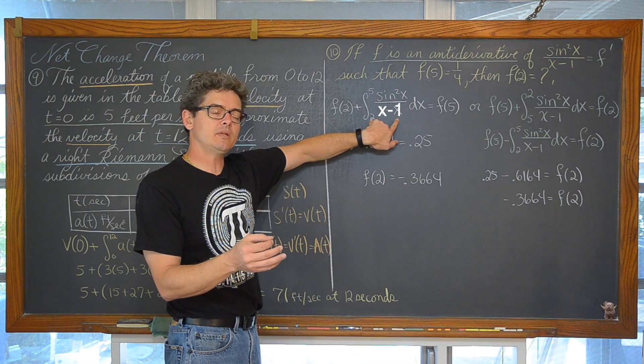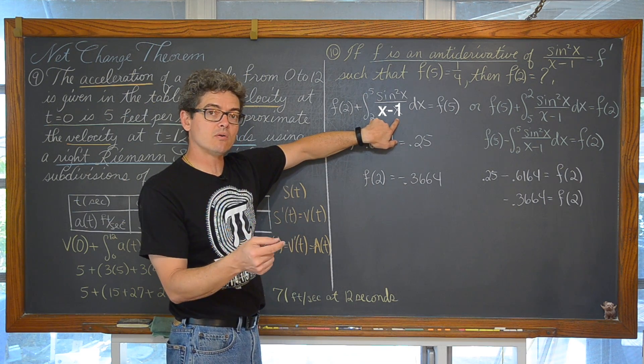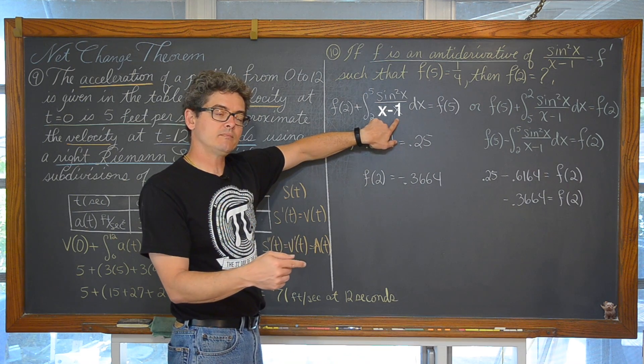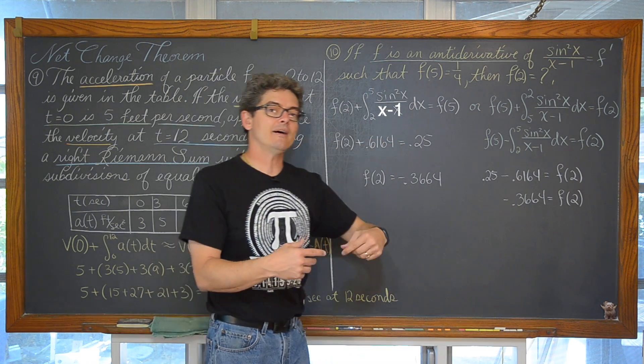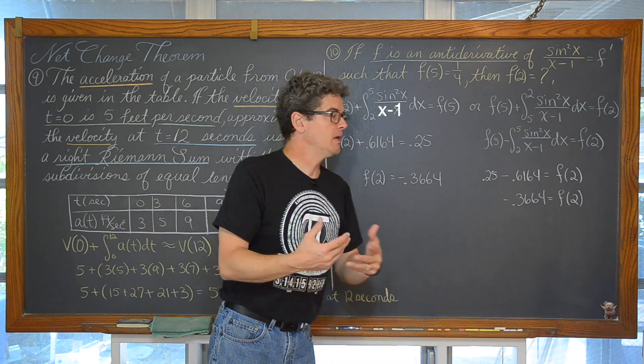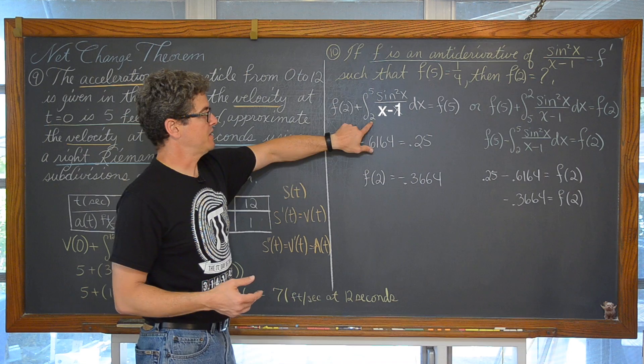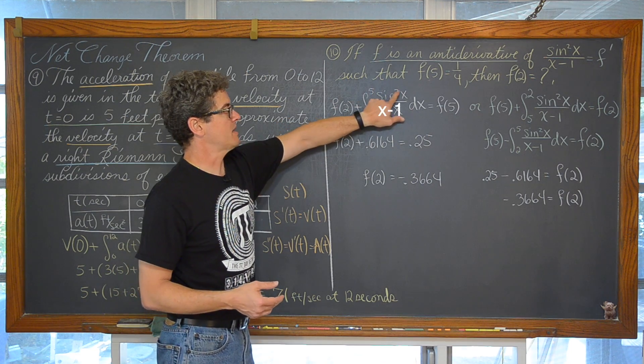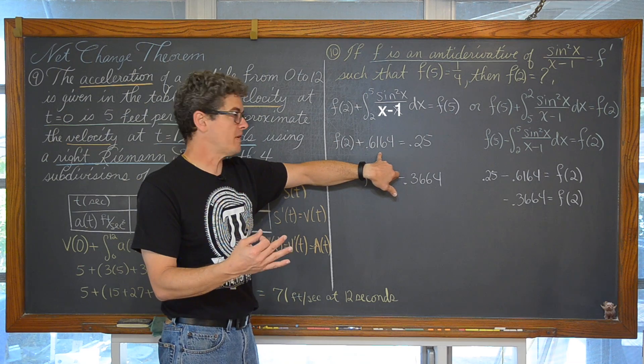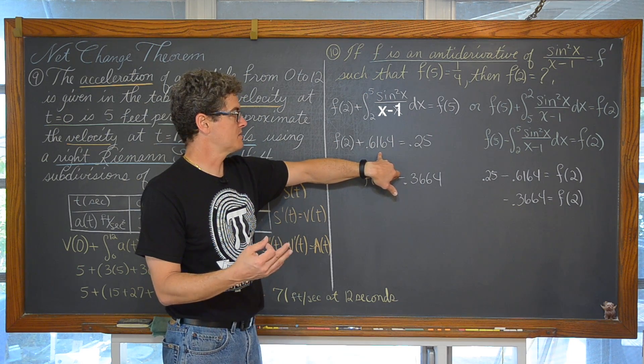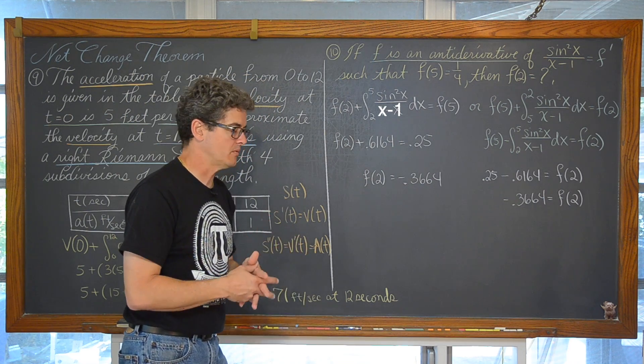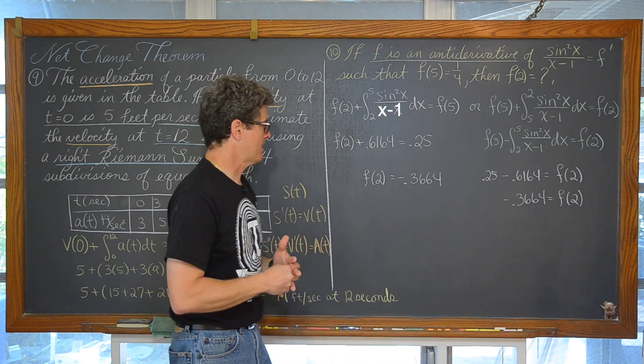When you take the AP exam you are going to need to know how to do things like numerical derivatives. Find numerical derivatives and numerical integration. In other words find a derivative of a function at a given value like what is f prime of 2. In this case we are going to find the definite integral from 2 to 5 of sine squared x over 1 minus x. If you don't know how to find this point 6164 from your calculator I am going to add a little bit to the end of this video and show you how to do that at least with a TI inspired.